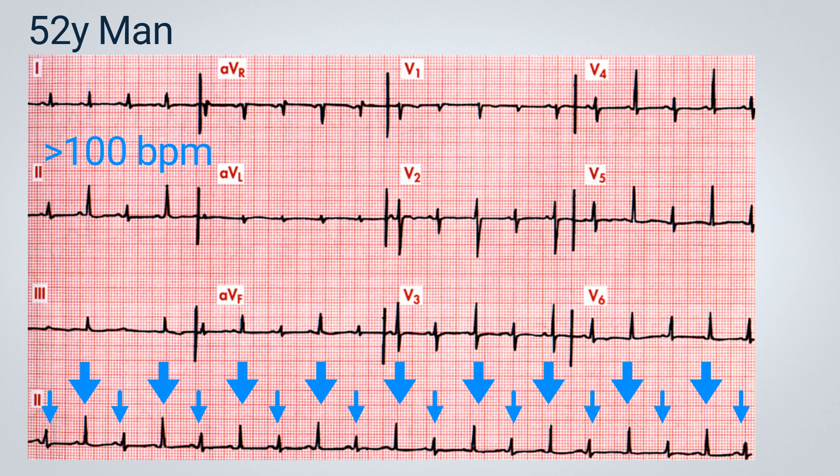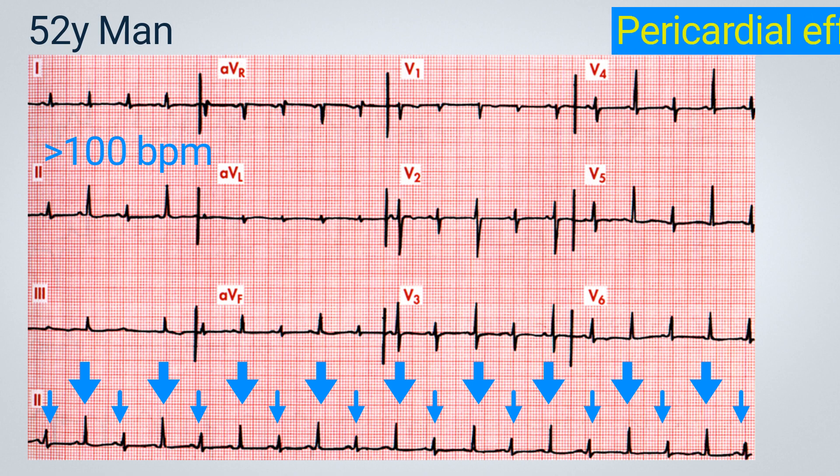So we have what is called a swinging heart. It appears to be floating within the pericardial sac, which is filled with fluid. As the heart beats, it changes its position within the pericardial sac, sometimes moving away from and sometimes approaching the electrodes. This results in the observed electrical alternation, or beat-to-beat variation. This electrocardiogram is highly suggestive of a pericardial effusion.